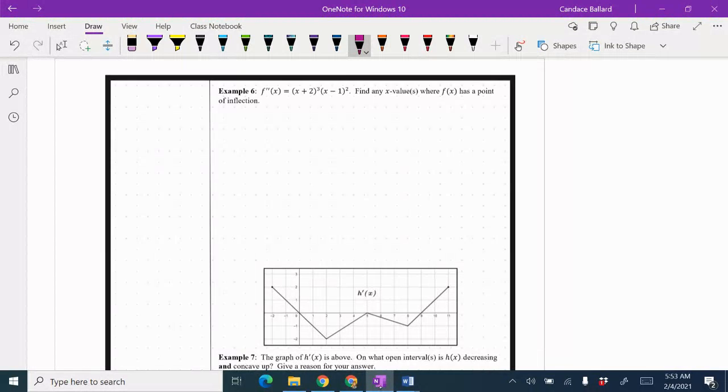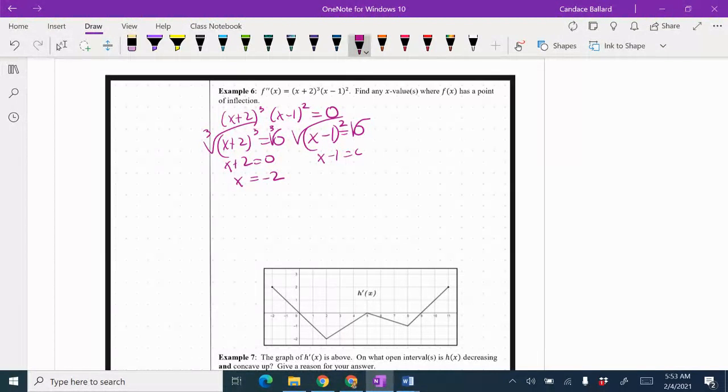So we only have to look at points of inflection. I've already got the second derivative, so I'm going to set the second derivative equal to zero to find my critical values. I'm going to go right into zero product property because they've already nicely factored it for us. I'm going to cube root, which would just make it zero. So I've got x plus 2 equals 0, so x equals negative 2 is one value. I'm going to do square root, which would be x minus 1 equals 0, so x equals 1 is a value.